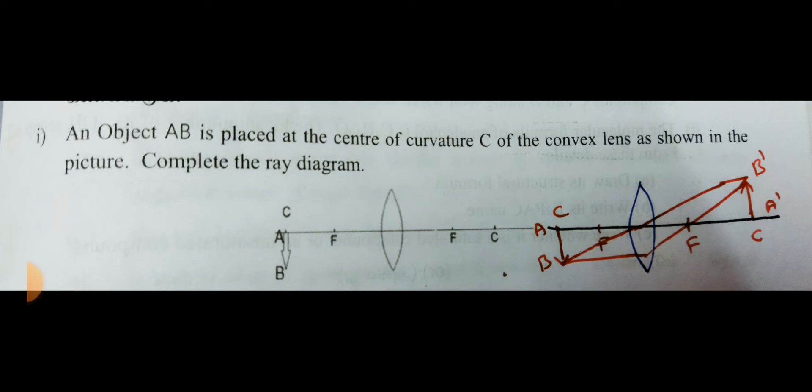First question: an object AB is placed at the centre of curvature C of a convex lens as shown in the figure. Complete the ray diagram. In this question, why I am saying that it is a created one? Because the object is inverted, so that the image will become erect, straight. So this is the main difference.